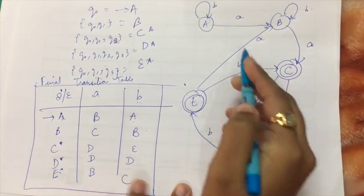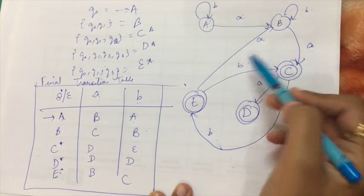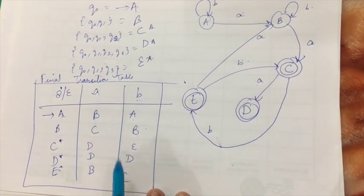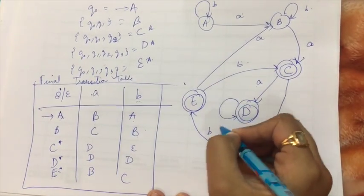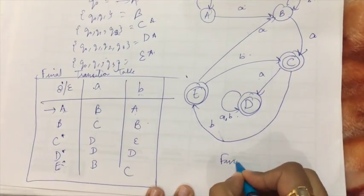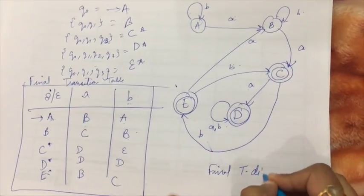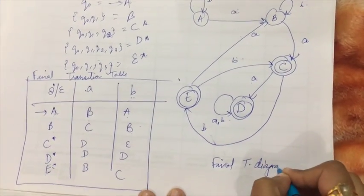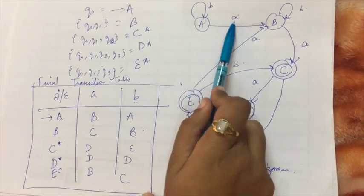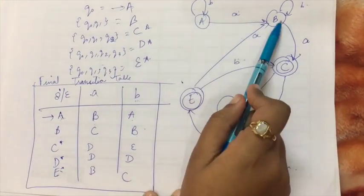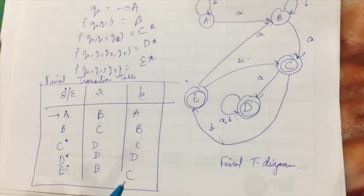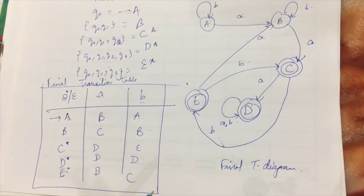After checking and completing the transition diagram, we can confirm that for every state and every input symbol there is exactly one corresponding output. That's all about converting an NFA to a DFA.